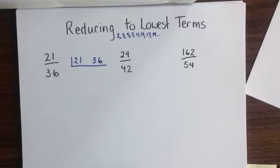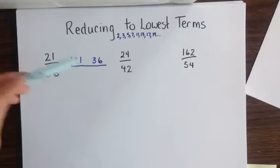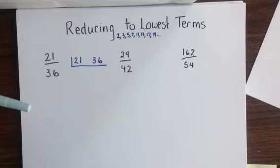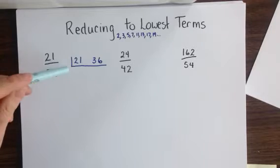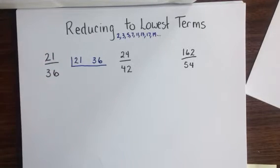And divide by these primes in order, from smallest to largest, choosing only those primes that will fit into both our numerator and our denominator.